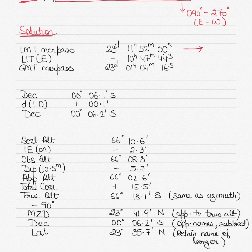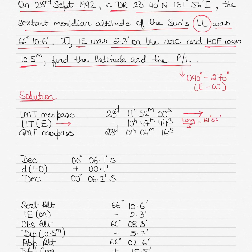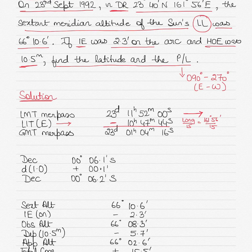To that you apply your LIT, your longitude in time. Longitude in time is calculated by dividing longitude by 15. In this case, dividing 161 degrees 56 minutes by 15 gives you 10 hours 47 minutes 44 seconds. Longitude east — GMT is least — meaning you subtract the LIT from the LMT to get the GMT. So the GMT meridian passage is still 23rd of September but at 01 hours 04 minutes and 16 seconds.